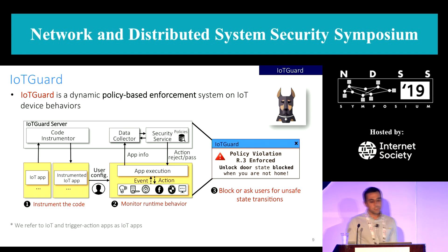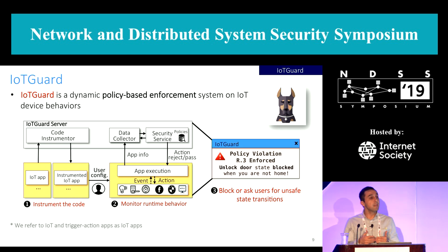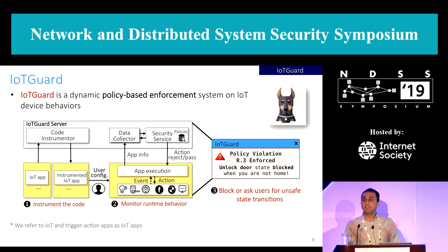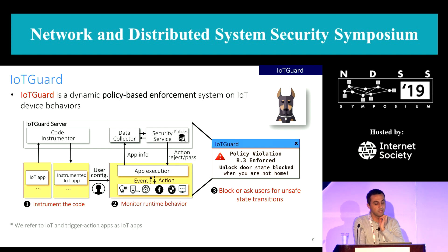To address these challenges, we have developed IoT Guard. IoT Guard is a dynamic policy-based enforcement system for IoT. First, it adds extra code logic to an application source code to collect application information at runtime. Then it stores this information in a dynamic model representing the runtime execution behaviors of the applications. Lastly, it enforces identified policies on the dynamic model of individual applications and interacting sets of applications. IoT Guard implements two mechanisms: the first blocks states that cause policy violations, and the second enables users to deny or allow states through runtime prompts.